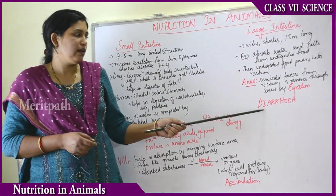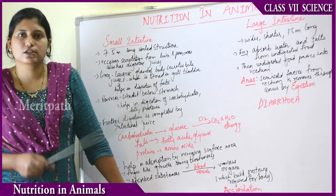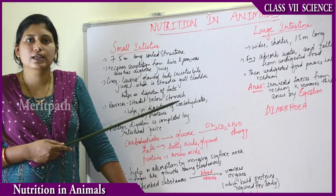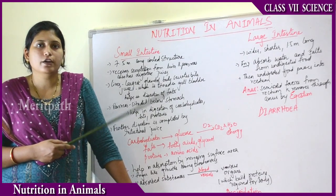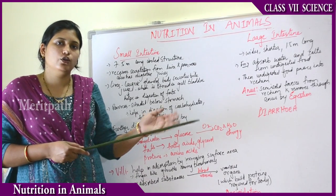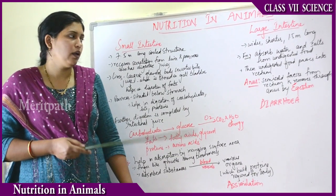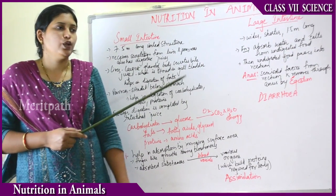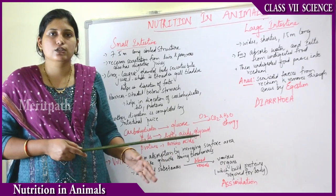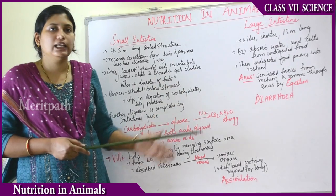Sometimes you get diarrhea, which is loose motions, caused by eating outside, undigested, or poisonous food. When you get diarrhea, before going to a doctor you should take ORS or oral rehydrating solution packets, available over the counter at medical shops. If not available, mix some sugar and salt into water and drink it as an ORS solution.